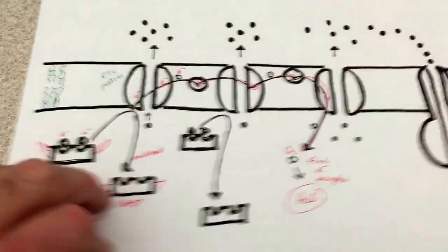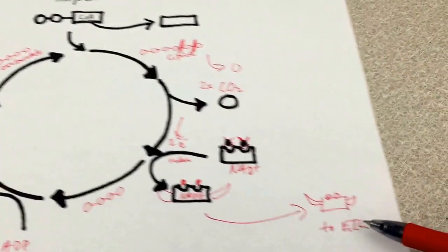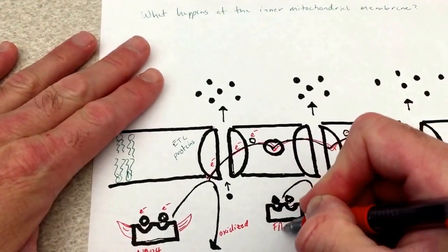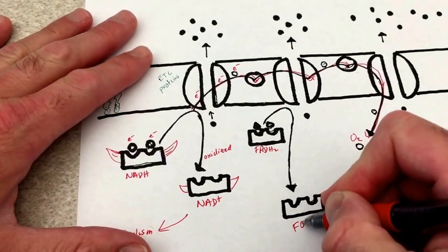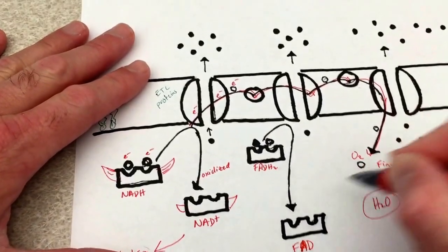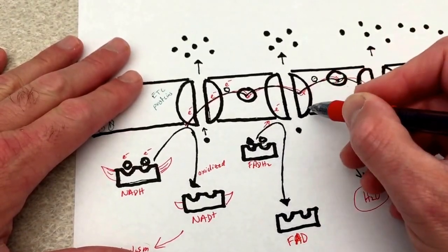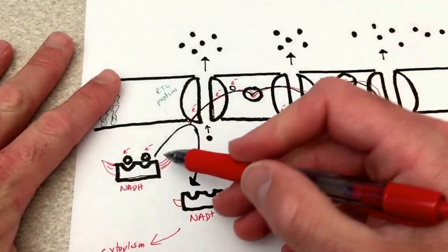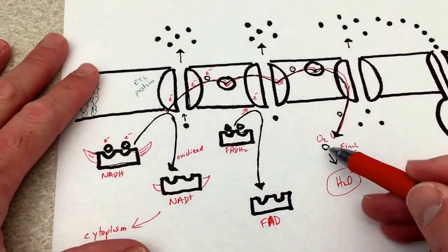The citric acid cycle produces two electron carriers going off to the electron transport chain: NADH is one, and FADH2 is another. Here we're showing FADH2 being oxidized into FAD — it's going to drop off its electrons at this protein here. So why do we transport electrons from protein to protein to protein all the way to O2 to become water? That's not the big picture.